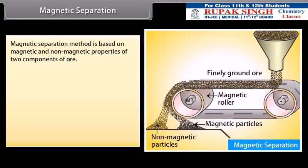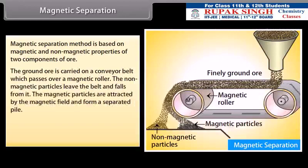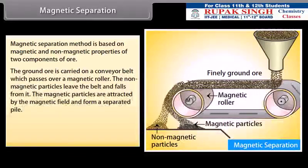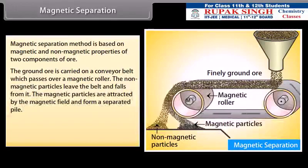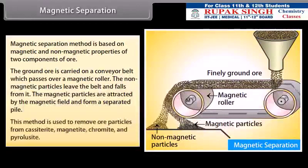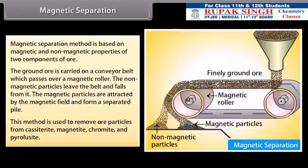Magnetic separation. Magnetic separation method is based on magnetic and non-magnetic properties of two components. The ground ore is carried on a conveyor belt which passes over a magnetic roller. The non-magnetic particles leave the belt and fall off from it. The magnetic particles are attracted by the magnetic field and form a separated pile. This method is used to remove ore particles from casitrite, magnetite, chromite and pyroleucite.